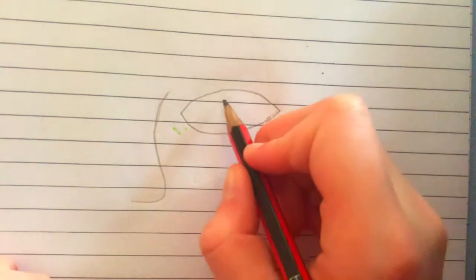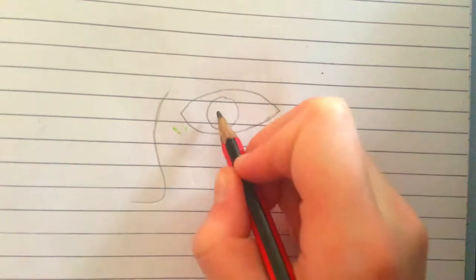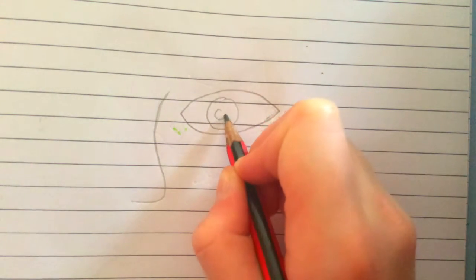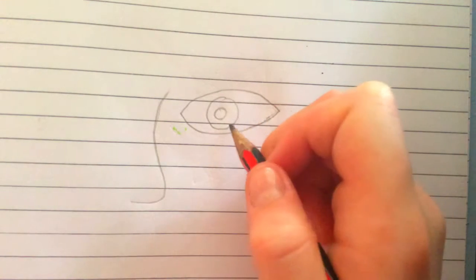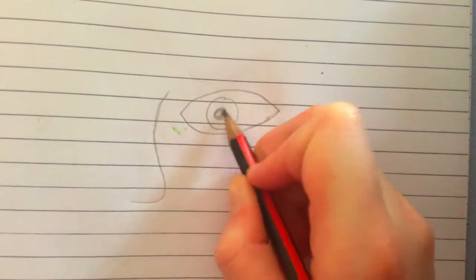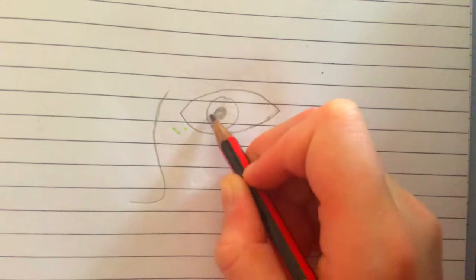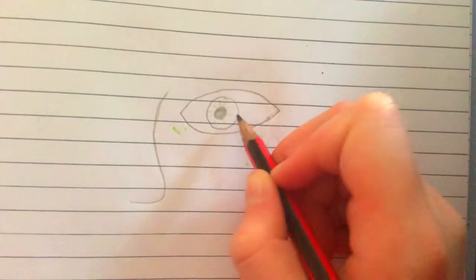Now you want to draw a circle in the inside and a smaller circle in the inside of that circle. You want to color this in and do little lines in there.